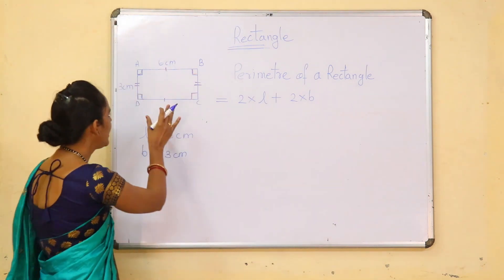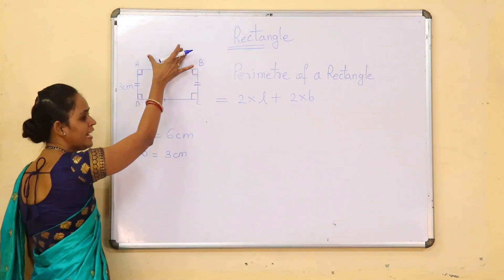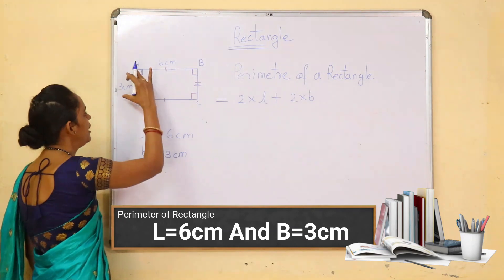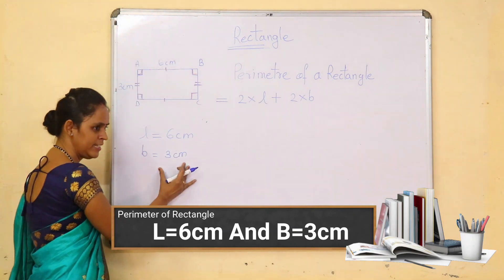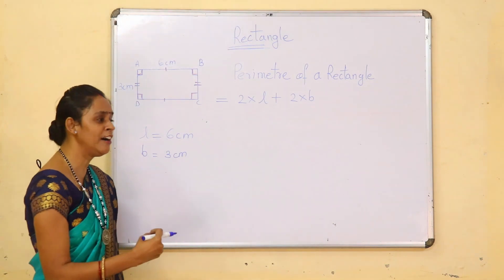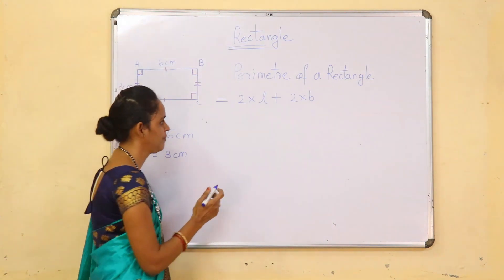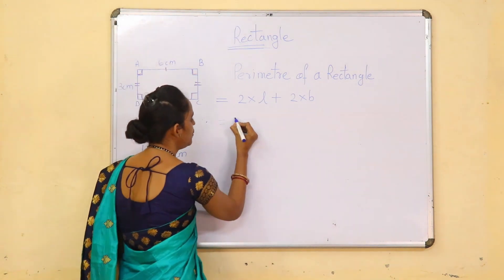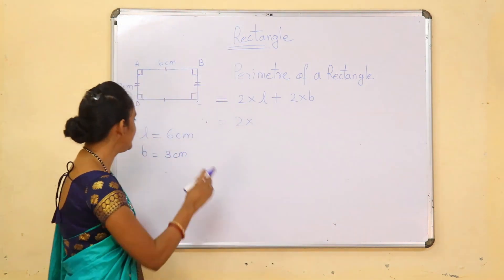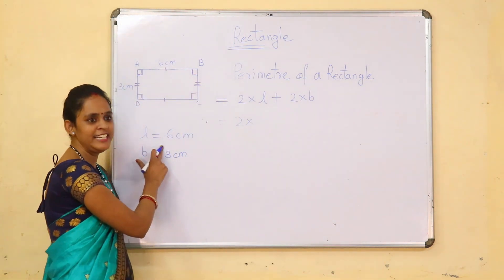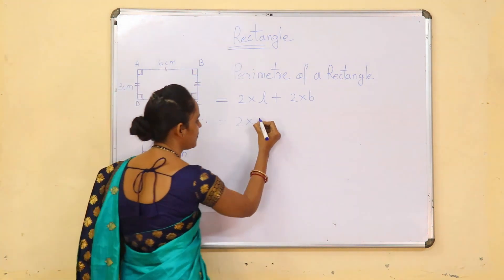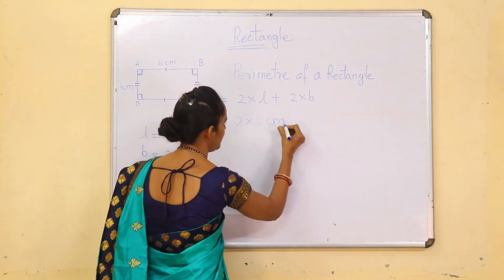For example, look at this figure. The length of the rectangle is 6 cm and the width of the rectangle is 3 cm. So now we are going to put in the values. It is: 2 into length — what is the length of this rectangle? Yes, 6 cm. Very good.